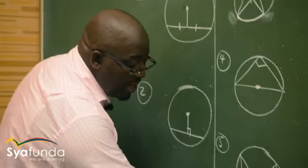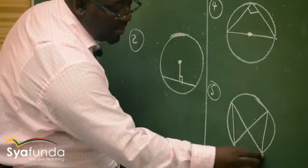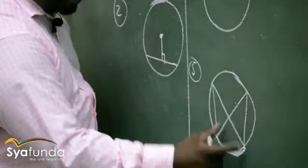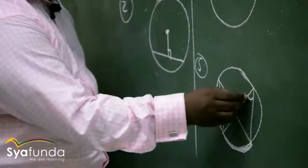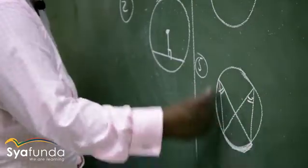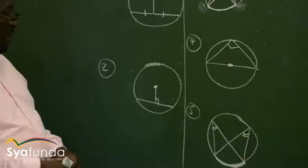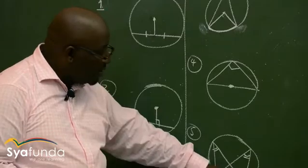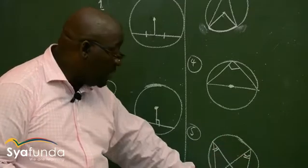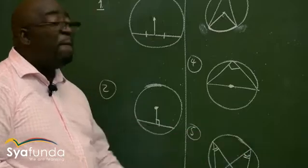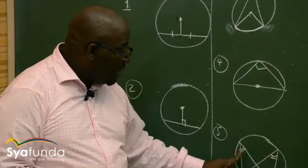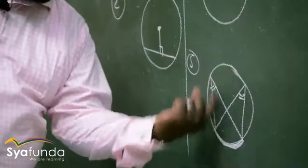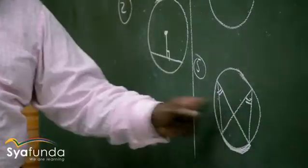Look at this arc here — it goes to the circumference. The same arc goes to the circumference. Therefore, these two angles are the same. They are subtended by the same arc or chord, so these are angles in the same segment. They are both in the major segment. So we call these two angles equal — they are angles in the same segment.